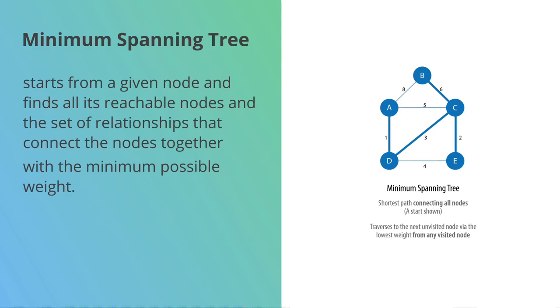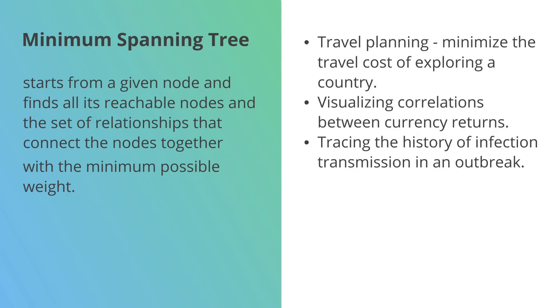Minimum spanning tree is the next one. Starting from a given node, I want to go to all of its reachable nodes or the subgraph that I can reach, and find the set of relationships that connect those nodes together with the minimum possible weight.